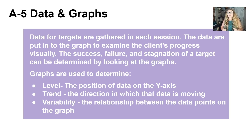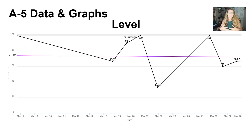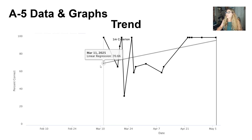A-5: Data and graphs. Data for targets are gathered each session and put into a graph to examine the client's progress visually. The success, failure, or stagnation of a target can be determined by looking at the graphs. Graphs are used to determine three things: level, which is the position of data on the y-axis; trend, which is the direction in which data is moving; and variability, which is the relationship between data points. For level, you take all the data points, find the mean — for example, 66.67 plus the other values divided by seven equals 73.81 — and that is your level line.